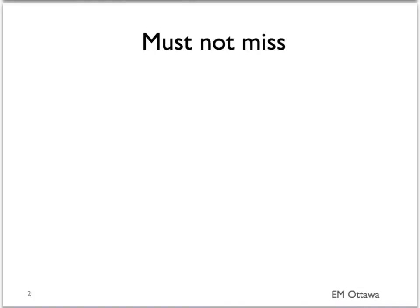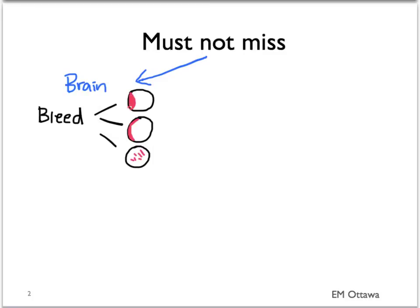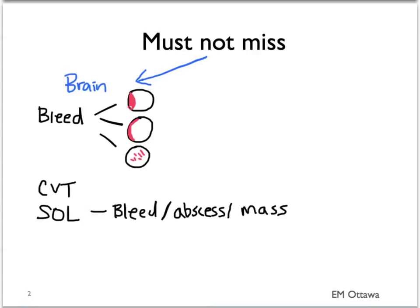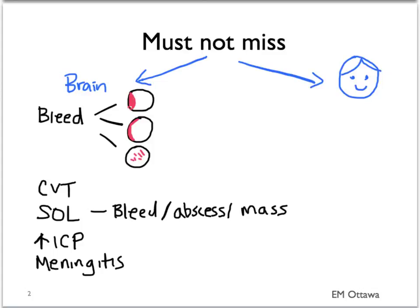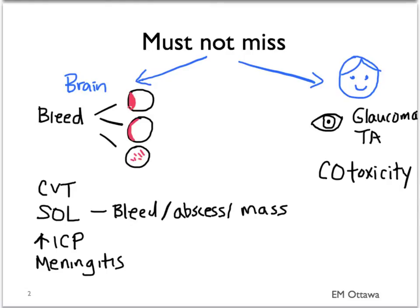To refresh your memory, there are a few must-not-miss diagnoses of headaches in the emergency department. Within the brain, there are diagnoses related to the blood vessels, including epidural, subdural, and subarachnoid bleeds, cerebral venous thrombosis, and space-occupying lesions in the parenchyma, including brain abscess and mass. In the meninges and CSF: increased intracranial pressure and meningitis. Outside the brain, we are worried about acute angle-closure glaucoma and temporal arteritis, which can affect vision, and lastly, carbon monoxide poisoning.